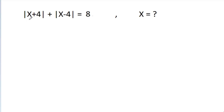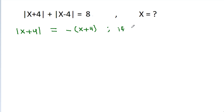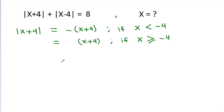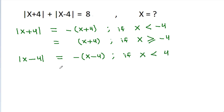In this video, we have given that |x+4| + |x-4| = 8, and we have to find the value of x. So |x+4| equals -(x+4) if x is less than -4, and equals x+4 if x is greater than or equal to -4. And |x-4| equals -(x-4) if x is less than 4, and equals x-4 if x is greater than or equal to 4.